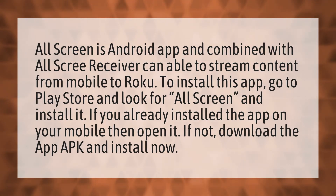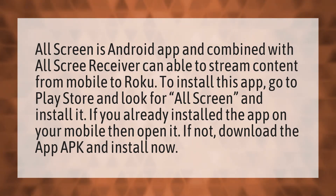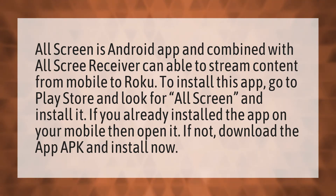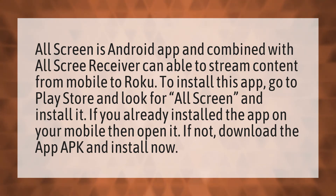AllScreen is an Android app and combined with the AllScreen receiver can stream content from mobile to Roku. To install this app, go to the Play Store, look for AllScreen, and install it.